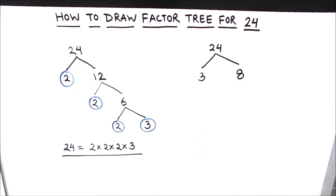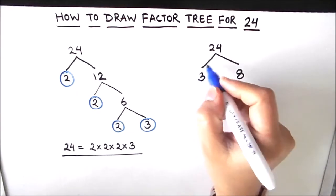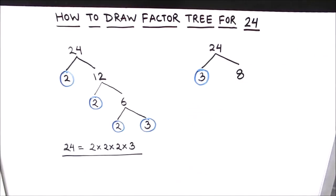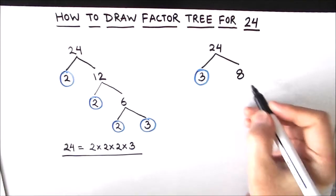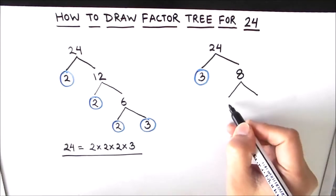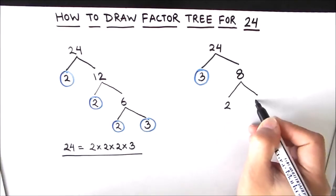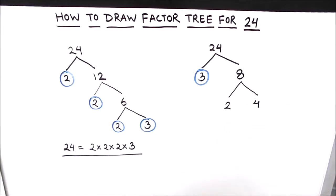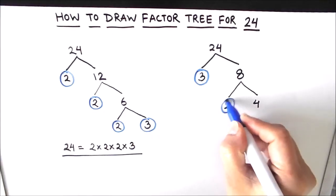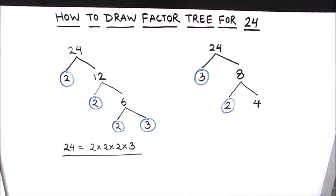3 times 8 is 24, so yes, 3 is a factor of 24 and it is a prime number, so we circle 3 — our path ends here. The other number is 8, which can be broken down further. 8 is an even number, so one of its factors is 2. 2 times 4 is 8, and 2 is a prime number, so we circle 2.